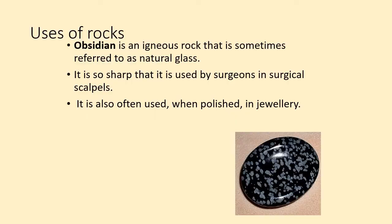Now we have obsidian, which is another type of igneous rock made from very large crystals. Obsidian is sometimes referred to as natural glass, and sometimes also as dragon's glass because it's formed in volcanoes at very high temperatures. Obsidian is very hard and can be cut to make things that are very sharp — it gets used by surgeons in scalpels. It can also be used in jewellery because it is very attractive and crystal-like when polished.